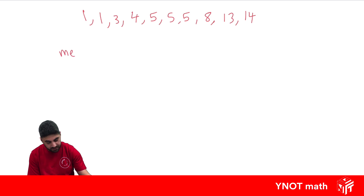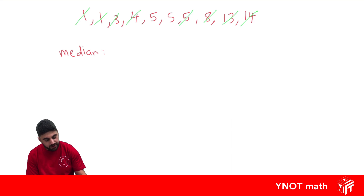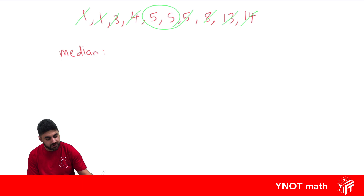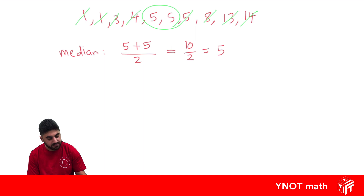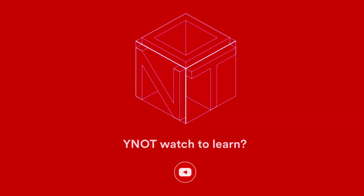Let's try finding the median this time. Remember, the median is the middle score. We cross off one from the front, one from the back, repeating until there are two numbers left in the middle. This happens because we have an even number of scores — last time we had 9, and now we have 10. Whenever you have an even number of scores, you end up with two scores in the middle. When this happens, you add those two scores together and divide by 2 — you're finding the average of the two middle ones. So we have 5 + 5 divided by 2, which is 5. Also, if the two middle numbers are the same, the median is just that number.